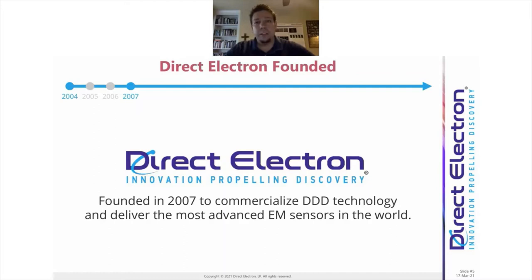In 2007, our company was founded to commercialize the technology that was being developed at UCSD and part of this collaboration. Our company, Direct Electron, is named Direct Electron because that was our focus — creating a direct detection camera for the very first time for electron microscopy and specifically for cryo-EM.